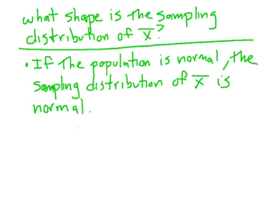Now we know the mean and standard deviation of our sampling distribution, but the question is: what shape is it? Is it normal, or is it something else? Not surprisingly, if you know your population is normal — things like height, for example — then the sampling distribution of x-bar is also normal. We did that post-it note activity, and it was not a surprise that the second group was also normal. So if you know your population is normal, then you know your sampling distribution of x-bar is normal.